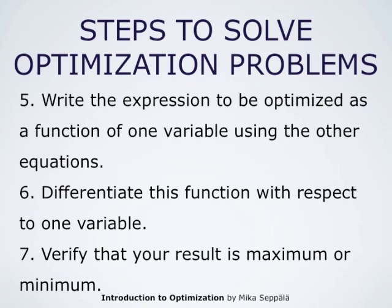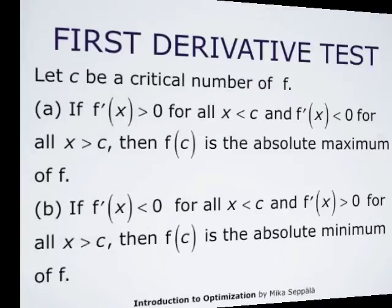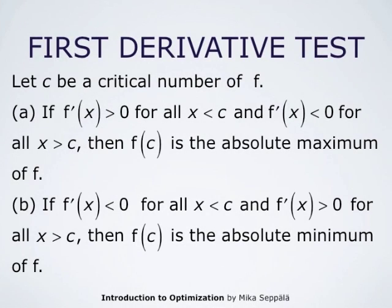The last step is to verify that the result found is the maximum or the minimum, depending on the question at hand. To determine this, one often uses the first derivative test. There are other ways too, but this is the most common. The first derivative test applies to a critical number C of a given function F. Remember that by a critical number we mean a number at which the derivative of the function takes the value 0, so F' at C equals 0.